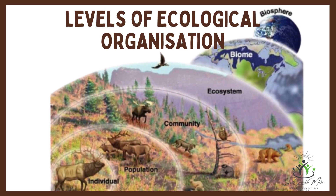Then we have an ecosystem. A community is the populations of different species together, and an ecosystem is a community plus its physical environment, interacting as a functional unit.